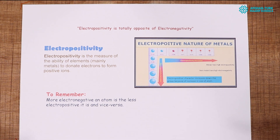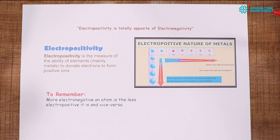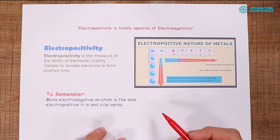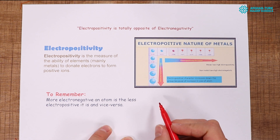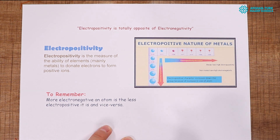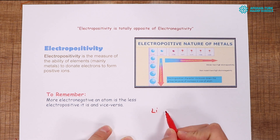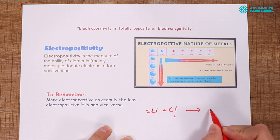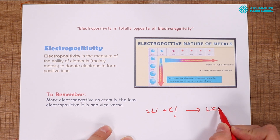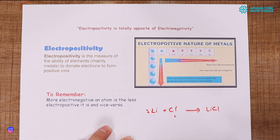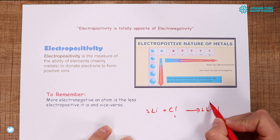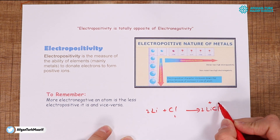For example, if lithium reacts with chlorine to form lithium chloride, lithium has a positive charge and chlorine has a negative charge.